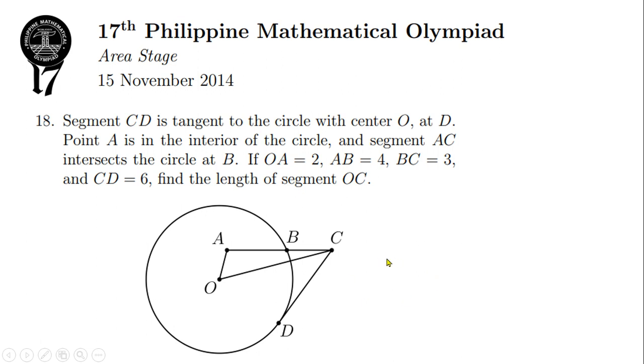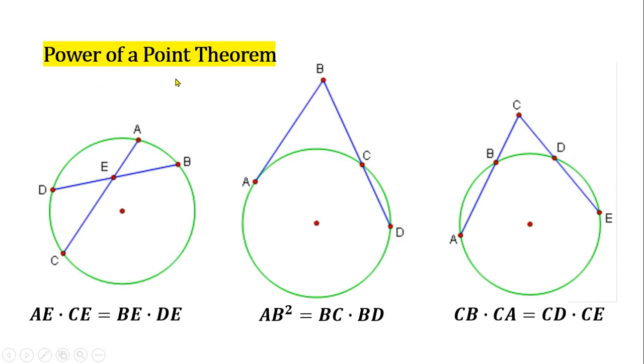When I first saw this problem, I immediately thought of the power of a point theorem because of the given segments that intersect the circle. And it turned out that it is actually the key to solving this problem along with some correct constructions. Now, before I show you the complete solution, let us go over first the power of a point theorem.